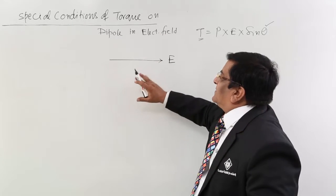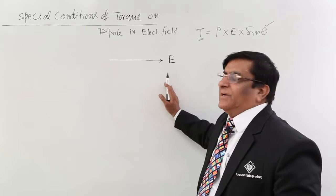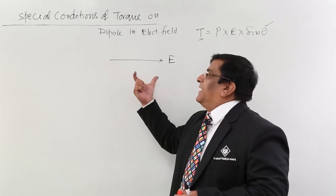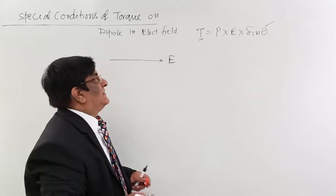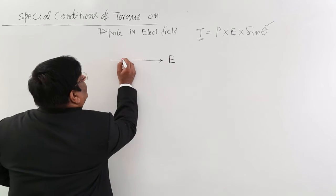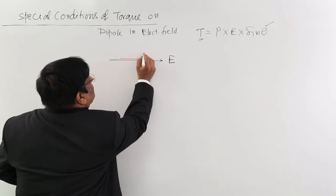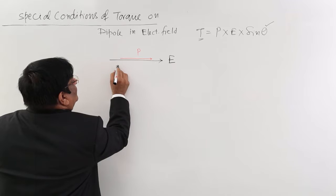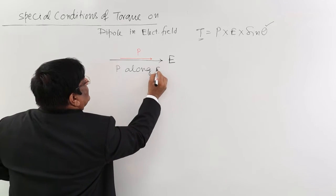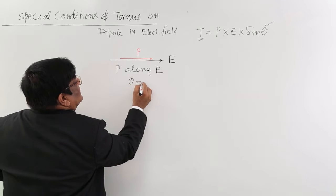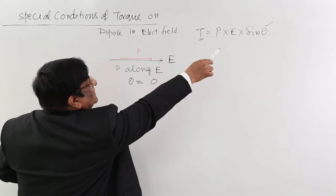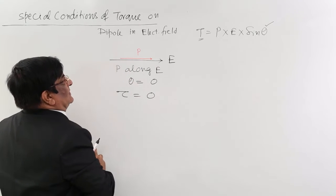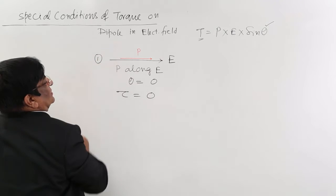Consider a space with a uniform electric field in one direction. We place a dipole here. The dipole has a dipole moment P, which is a vector quantity. Special condition number 1: P is along E. In this case, theta is 0. Putting 0 into the formula, sin0 = 0, so torque is 0. This is our special condition number 1.